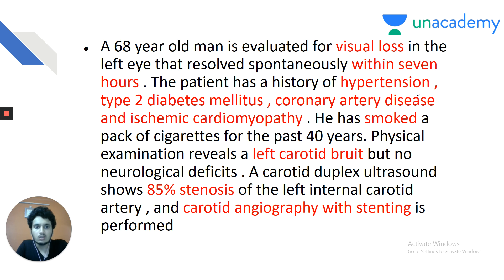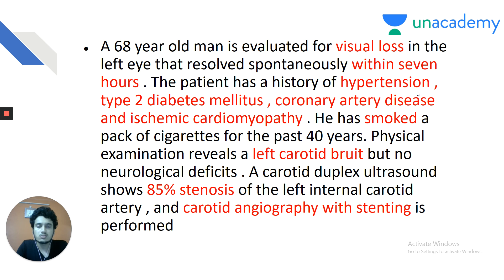The patient has all the comorbidities: hypertension, type 2 diabetes mellitus, coronary artery disease, and ischemic cardiomyopathy. He has smoked a pack of cigarettes for the past 40 years — 40 pack years. Personal history is very important in any case of medicine. 20 pack years is what makes one prone for lung carcinoma. Physical examination reveals a left carotid bruit, indicating atherosclerosis of the carotid artery, and carotid duplex ultrasound confirms 85% stenosis.